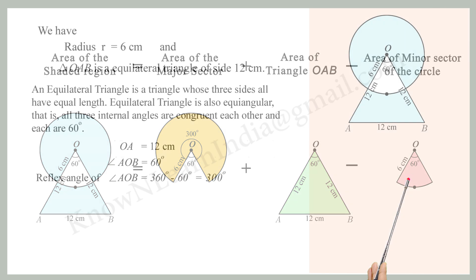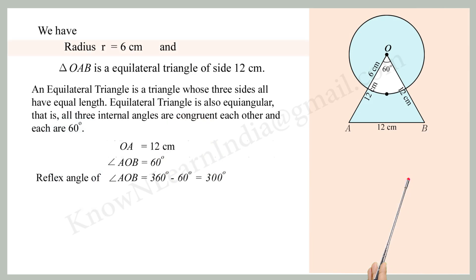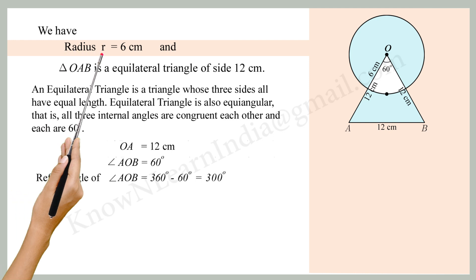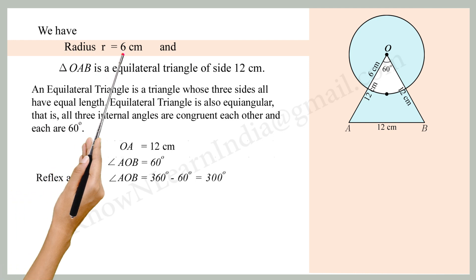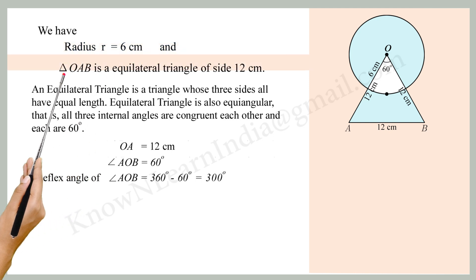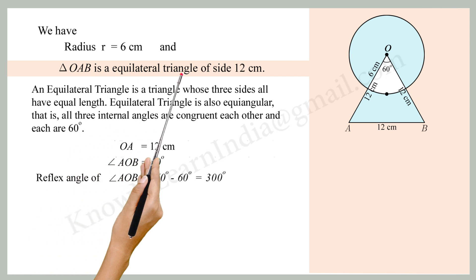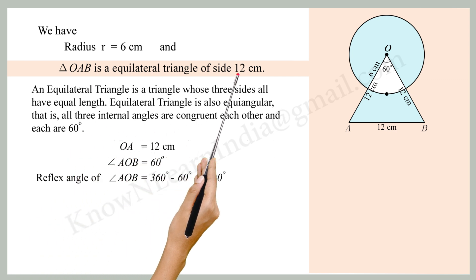Now we can move to calculations. We have been given that the radius of the circle is 6 cm. Triangle OAB is an equilateral triangle with sides measuring 12 cm each.